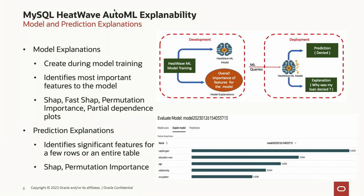We support SHAP, and we have a new technique called fast SHAP, which is IP we developed at Oracle. We also have permutation importance and partial dependence plots. You can do a lot with these tools if you want to go deeper.